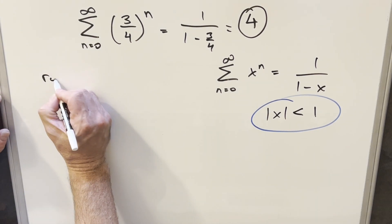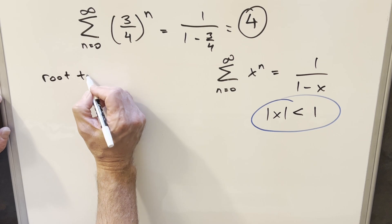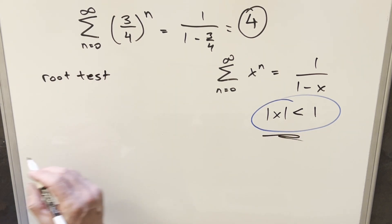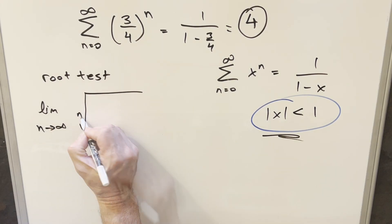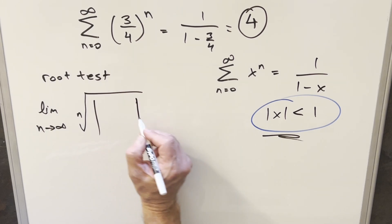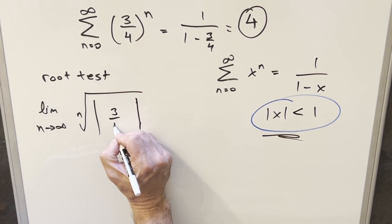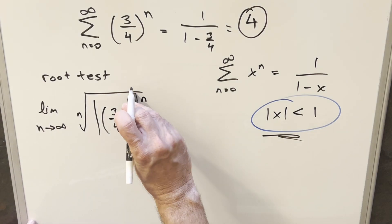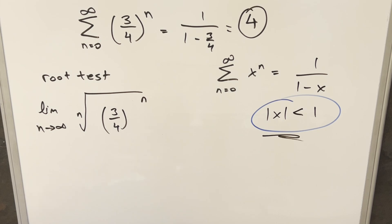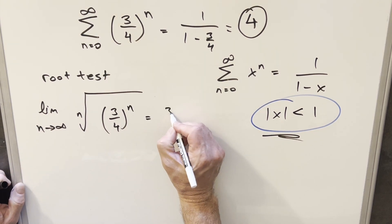What I want to do now is let's do this using the root test. We're doing this just to show convergence, even though we already know it converges. What we need for the root test is we're going to look at the limit as n goes to infinity of the nth root of the absolute value of what we have here, which is just going to be 3-fourths to the n. Doing this, you can take the root and bring it outside of the absolute value. We can drop the absolute value since 3-fourths is positive. The nth root of 3-fourths to the n is just going to be 3 over 4.